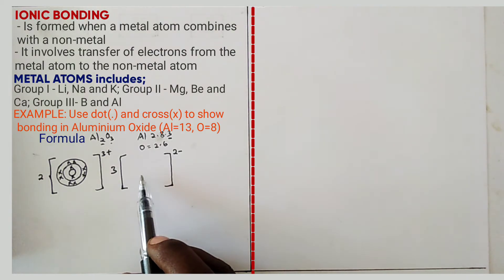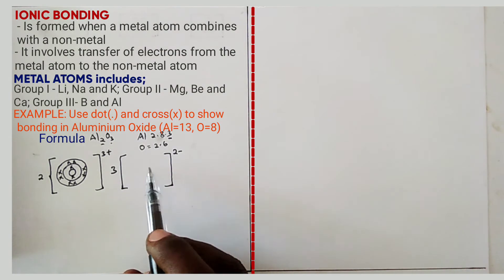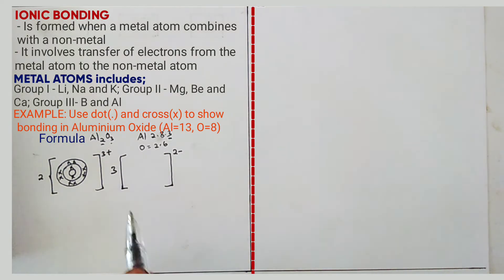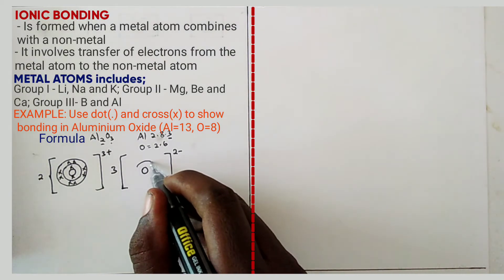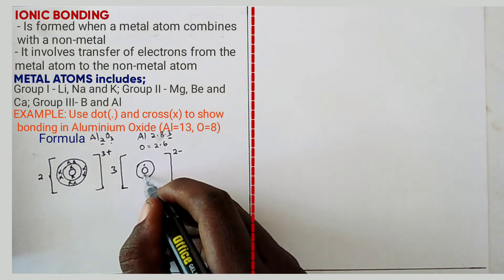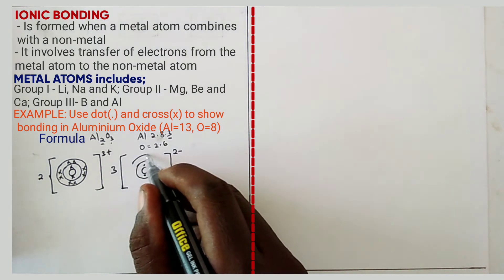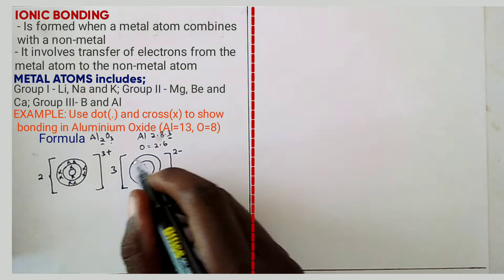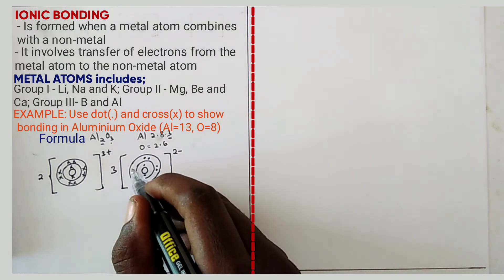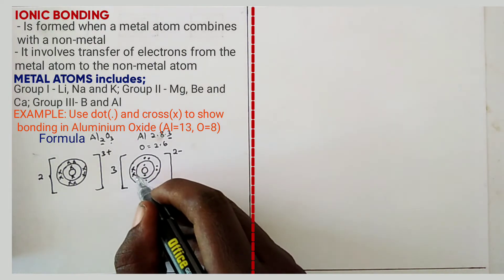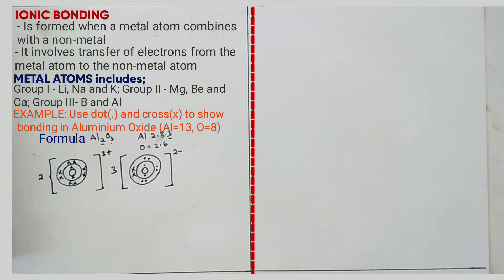If you use crosses for aluminium, you have to use dots for oxygen. To draw the ion of oxygen, first draw 2.6 using dots. Then the two electrons to be gained are shown as crosses. Draw the nucleus, then the first energy level with two dots, the second energy level with six dots, then two electrons gained shown as two crosses. That is the bond formed in aluminium oxide.